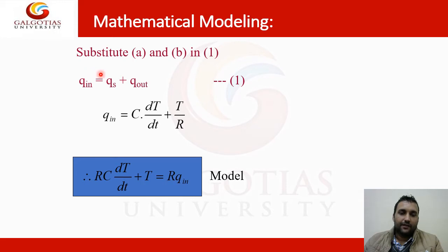Further, putting these equations and solving further. Q_in is equal to Q_s plus Q_out. Here, the Q_in is equal to C into change of temperature with respect to time plus T upon R. As RC, that is resistance into capacitance with change of time or change of temperature with time plus temperature is equal to R Q_in. Again, this is the mathematical model. This is the mathematical model for thermal Oven.